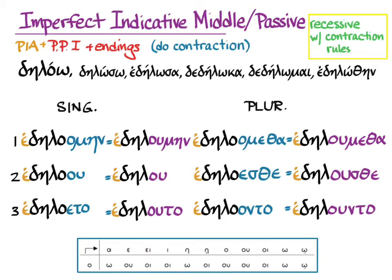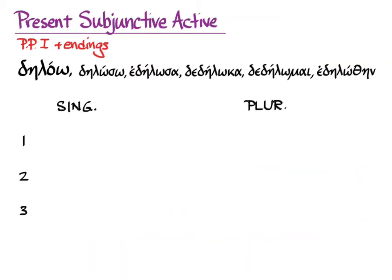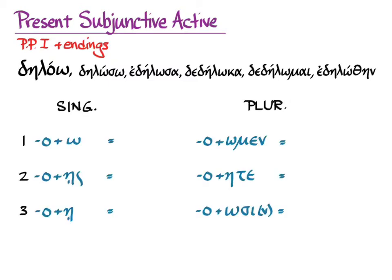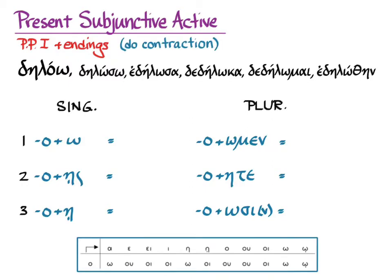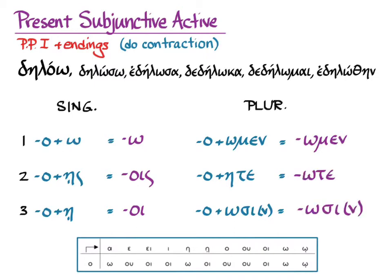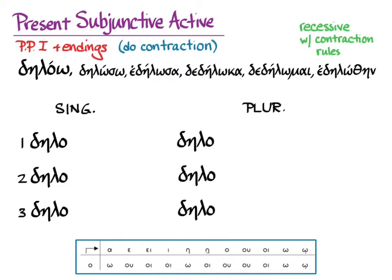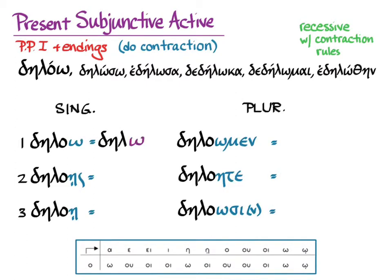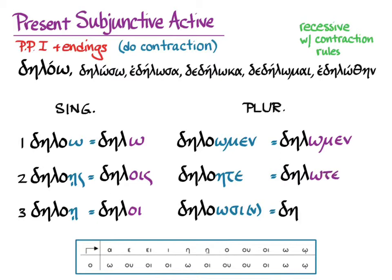Now the subjunctive. First principal part and endings. Here are the omicrons with the endings we know — after contraction, we get: ō, ois, oi, ōmen, ōte, ōsi. With recessive accent and contraction rules applied to delao, that gives us: dēlō, dēlois, dēloi, dēlōmen, dēlōte, dēlōsi.